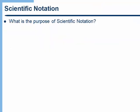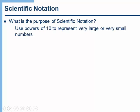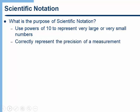Let's talk about scientific notation. The purpose of scientific notation is to allow us to represent very large or very small numbers more easily. Also we'll find that when we talk about significant figures scientific notation allows us to represent the precision of a measurement correctly.